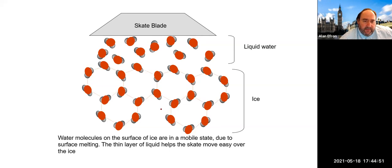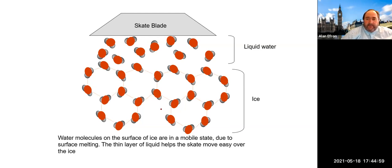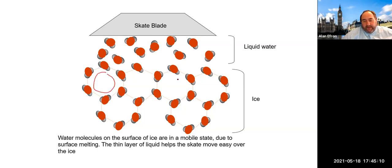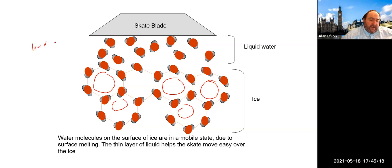Now we're going to talk a bit more about water. In the solid form, liquid water creates a lot of open areas as the molecules bond through hydrogen bonding, creating a very low density for ice versus liquid water. That's why ice floats. If you think about ice skating, you have liquid water molecules at the surface, which allows a blade to glide through, with solid ice providing the foundation beneath.